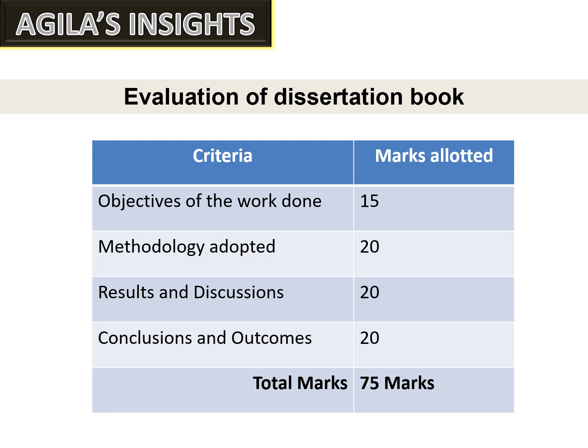The evaluation is divided into two parts. The first part is the evaluation of the dissertation book — that is, the report — which must be prepared individually by each student. The total marks for the dissertation book is 75, divided into four criteria: objectives of the work done (15 marks), methodology adopted (20 marks), results and discussions (20 marks), and conclusions and outcomes (20 marks).